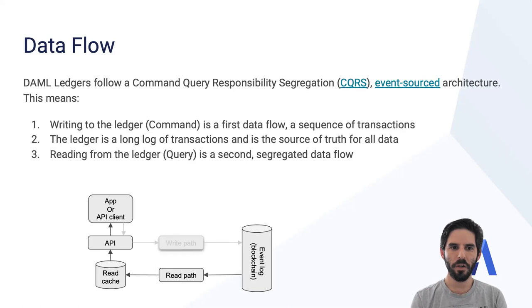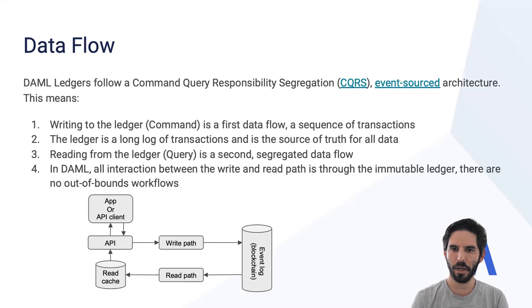Reading from the ledger, what we call query, is a second and segregated data flow. The important thing here is that in demo, all interactions between the write path and the read path are only through the immutable ledger. There are no out-of-bounds workflows.